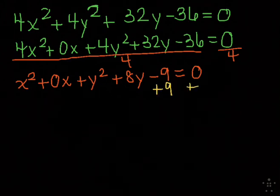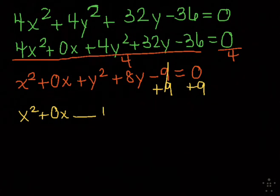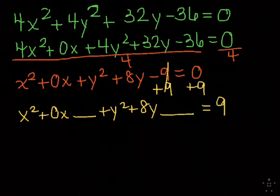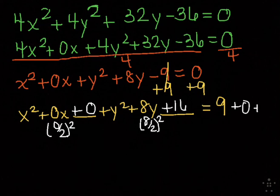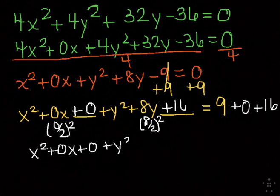Now we do what we normally do. Move the 9 by addition. So that's x² + 0x, leave a space, plus y² + 8y, leave a space, equals 9. Now we do what we've been doing. Half the middle number squared. So 0 divided by 2 squared is 0, so we're adding in a 0. 8 divided by 2 squared: 8 divided by 2 is 4, 4 squared is 16. We're adding in a 16. This is just x² + 0x + 0 + y² + 8y + 16 = 25.